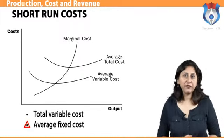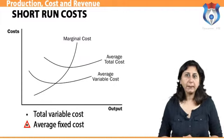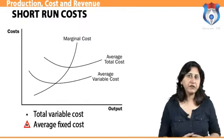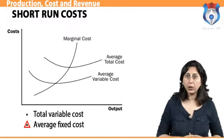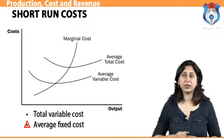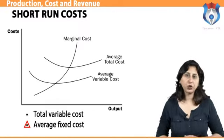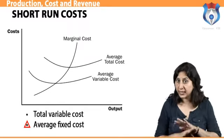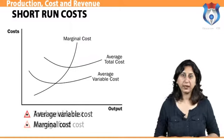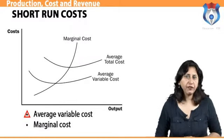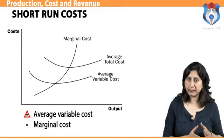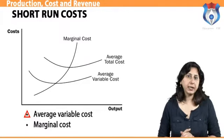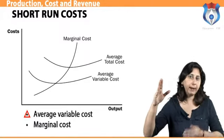Average fixed cost refers to fixed cost per unit of output. It is found by dividing the total fixed cost by the corresponding output. Average fixed cost diminishes with every increase in the quantity of output produced, but it never becomes zero. Average variable cost refers to the variable expenses per unit of output and is obtained by dividing the total variable cost by the total output.